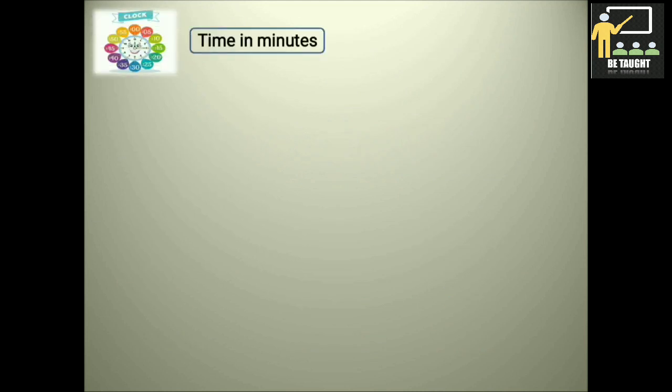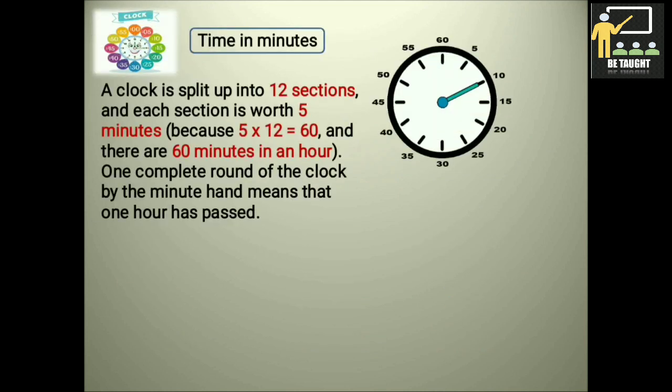Time in minutes. A clock is split up into 12 sections, and each section is worth 5 minutes, because 5 multiplied by 12 is equal to 60, and there are 60 minutes in an hour. One complete round of the clock by the minute hand means that one hour has passed.